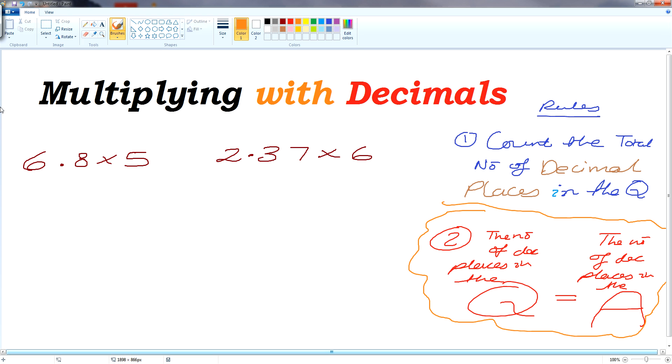So we have 6.8 times by 5 is the first example. So let's have a look. Now when you set that out, you set that out in the traditional way as a short multiplication question like this.